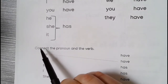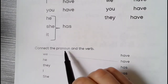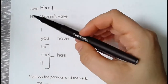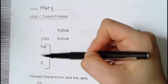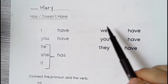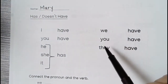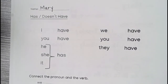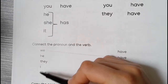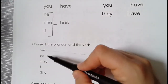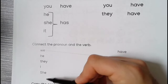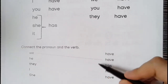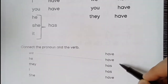So here, connect to the pronoun. These are pronouns: I, you, he, she, it, we, you, they. So this side is pronouns, and this side is the verb — have, has.